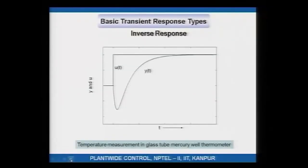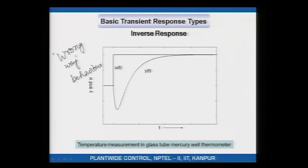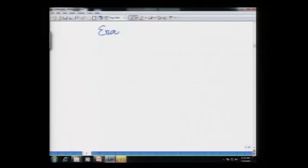Here is an inverse response: you give a step change, the output goes in the wrong direction first — in the other direction first — then turns around and goes back up. The initial direction of response is in some sense the wrong direction; this is also referred to as wrong-way behavior. Another common example of inverse response in chemical processes is the level inside a boiler.